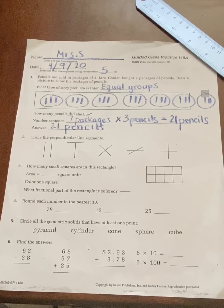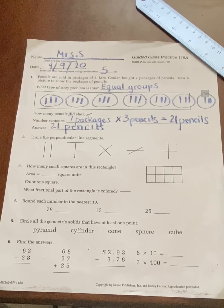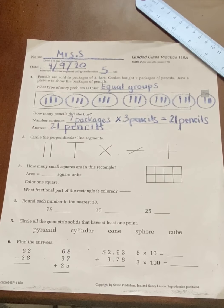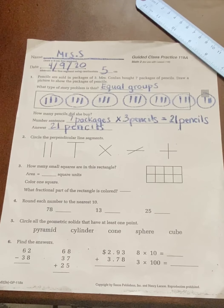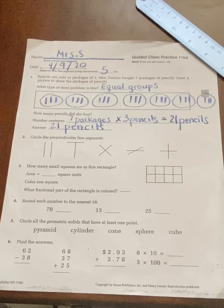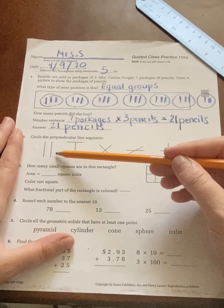So now it says number two, circle the perpendicular line segment. If you watched the previous video on activity master 118, we talked about perpendicular line segments are lines that meet at a right angle or 90 degrees. So let's go ahead and look.